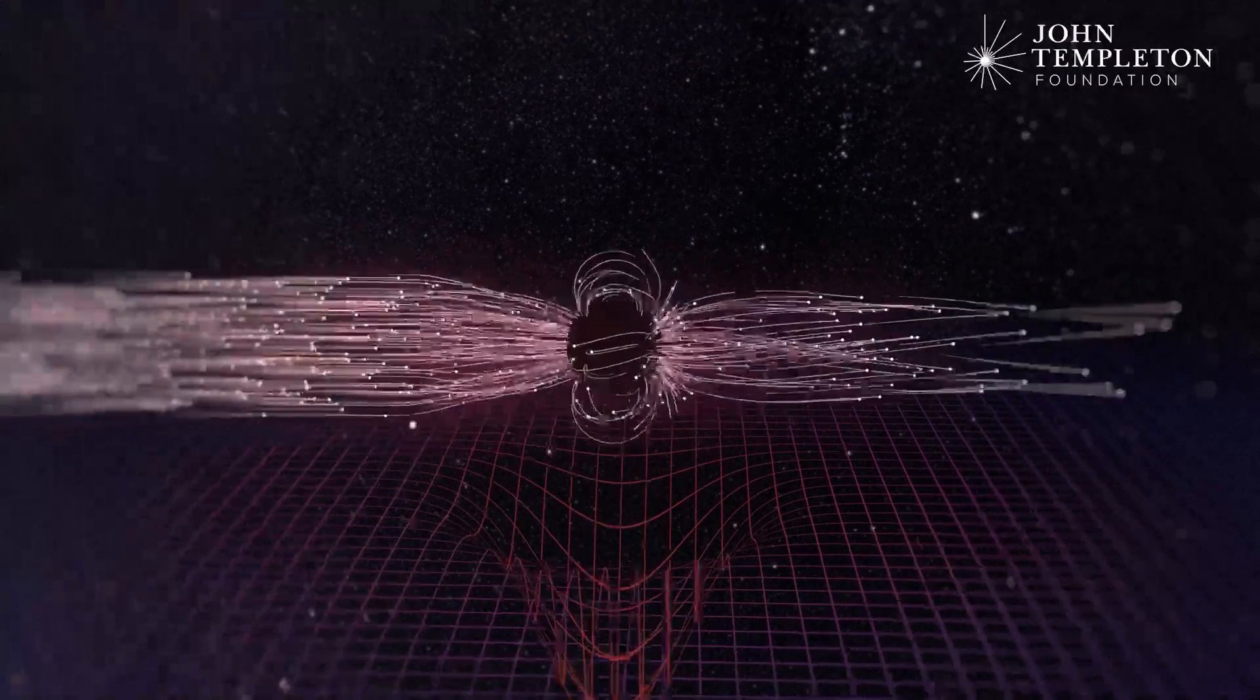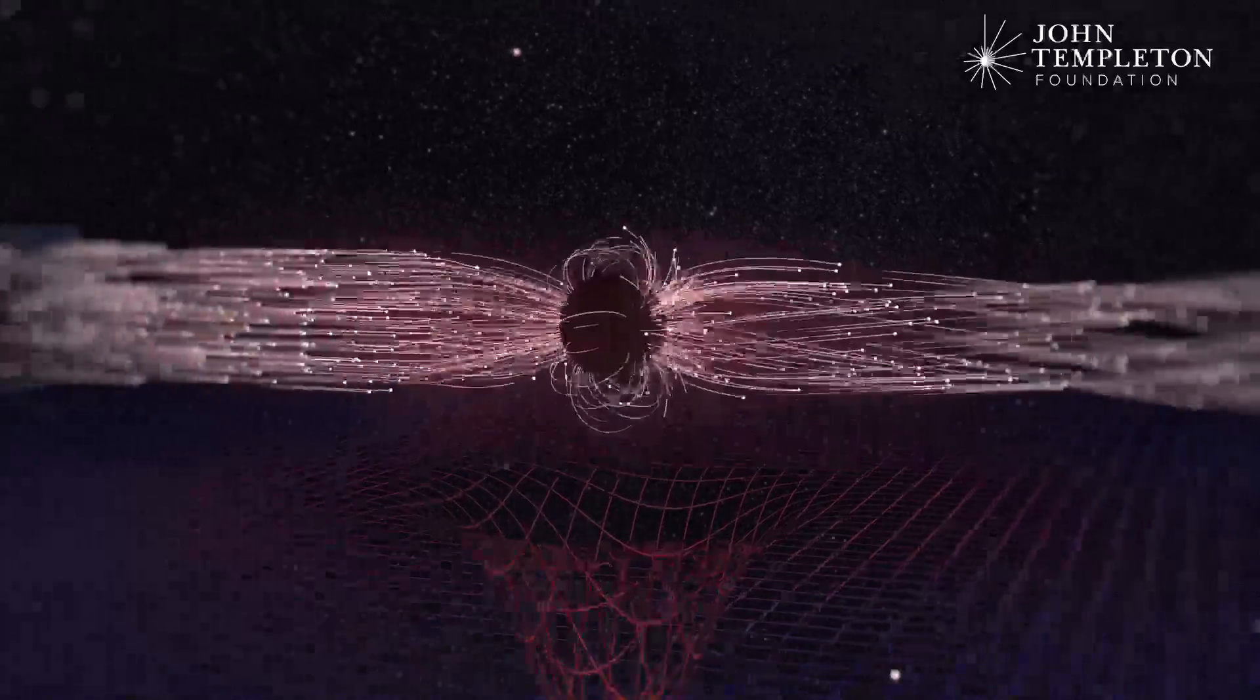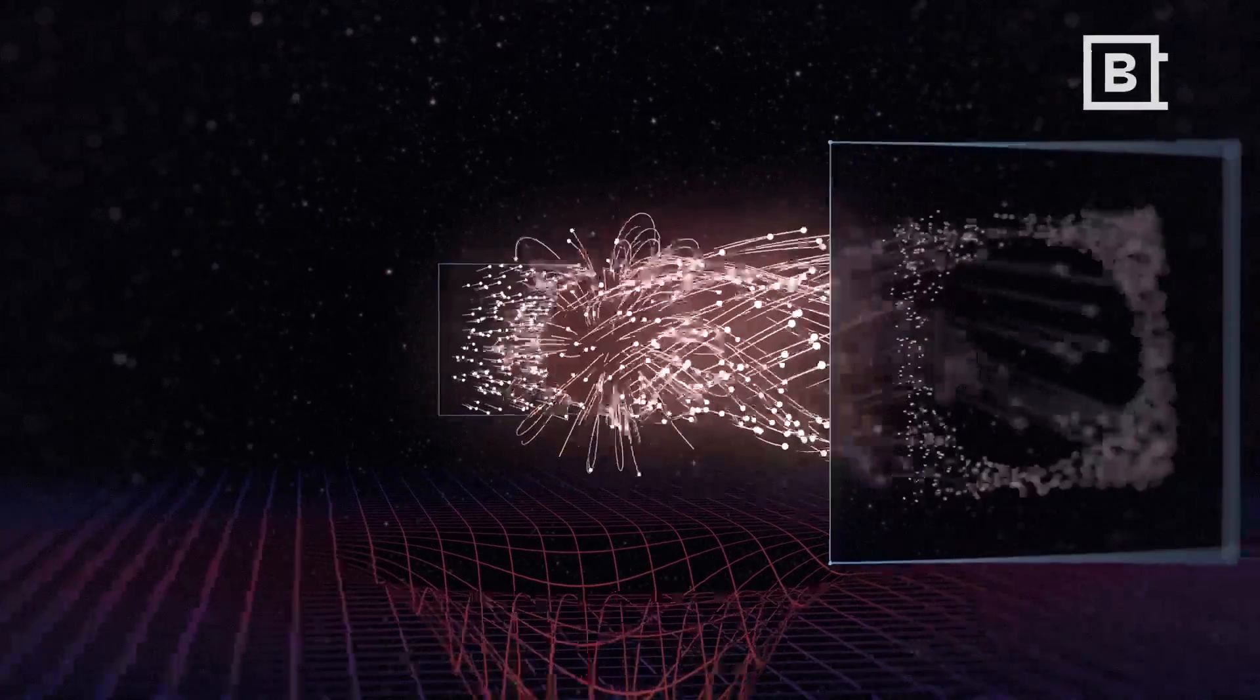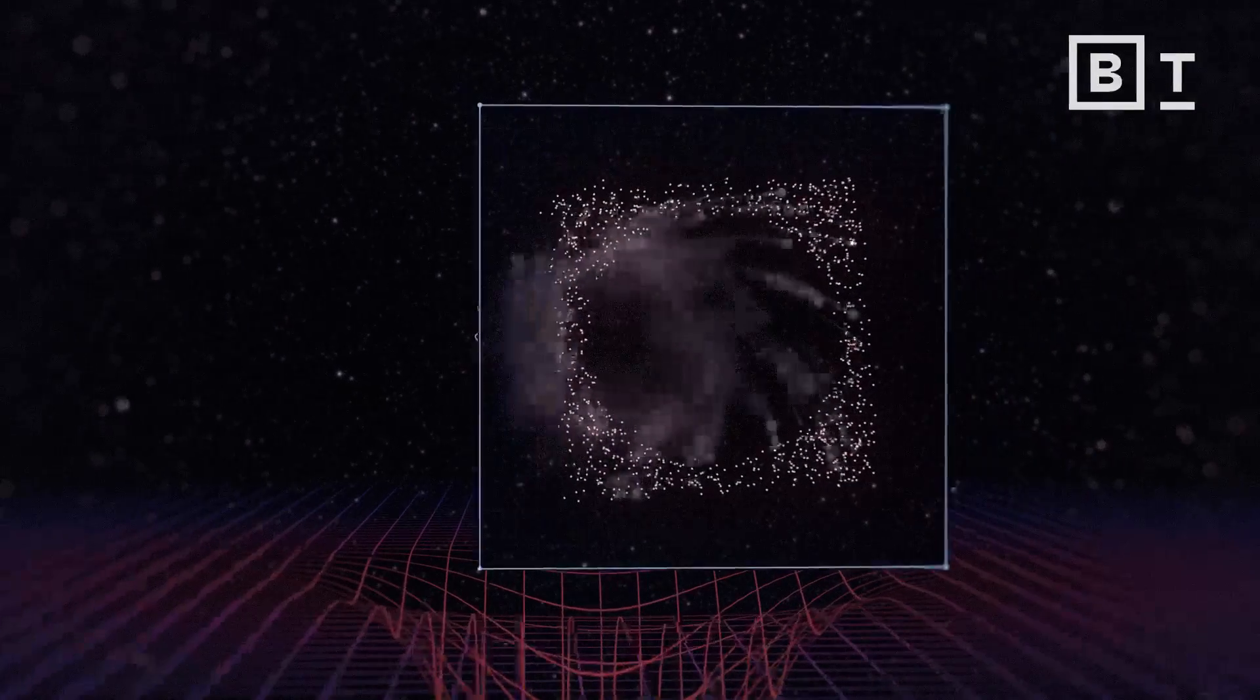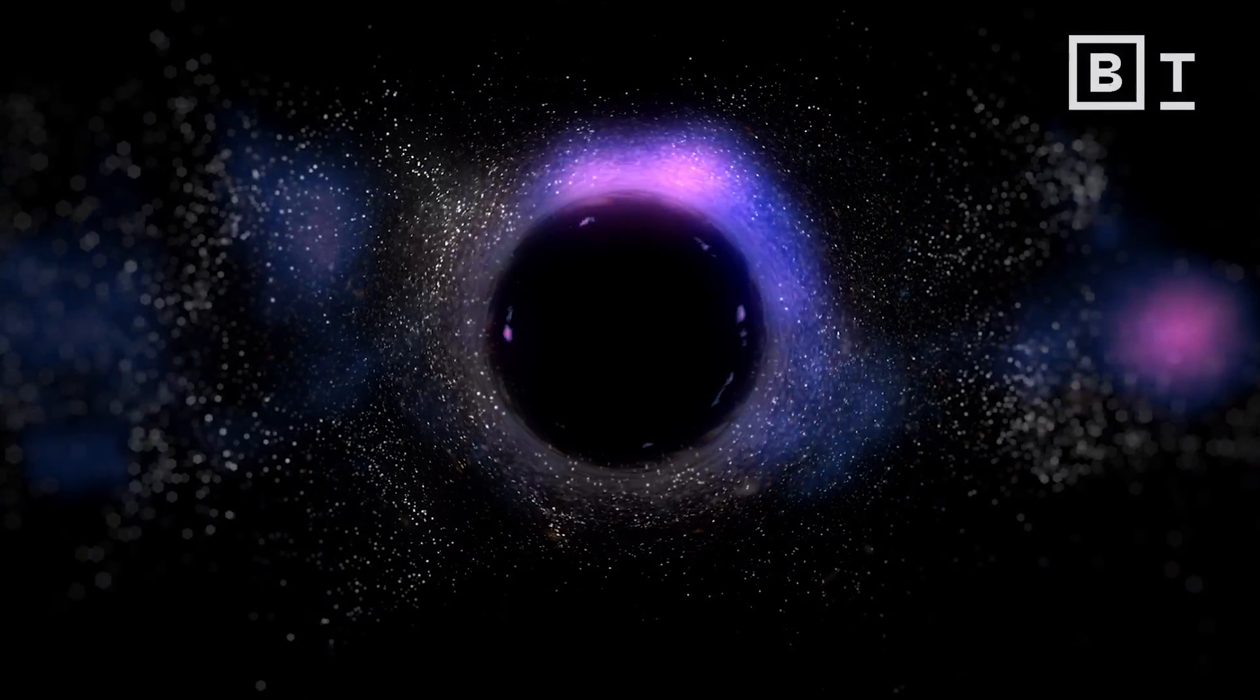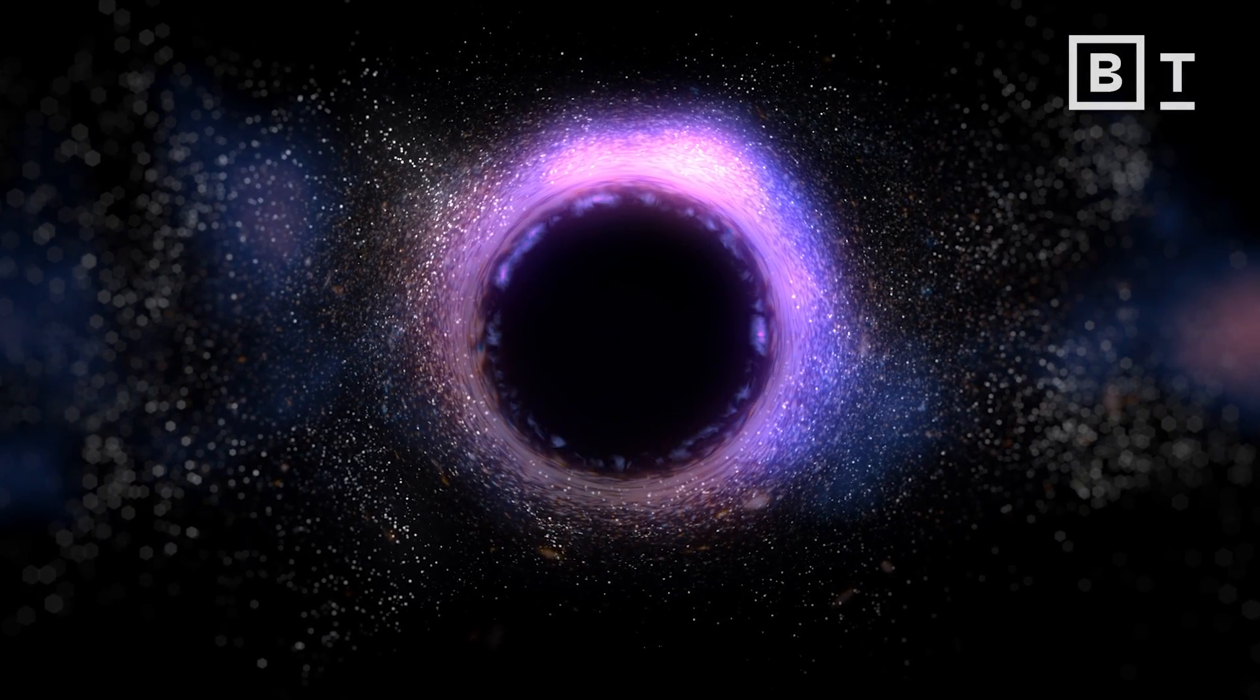Black holes do not emit light. They are black. But the matter that swirls around them emits light as it heats up. And so some of this light can get absorbed by the black hole when it comes from behind it. And that appears as a silhouette, a dark part of the image that represents the region around the black hole from where light cannot escape.